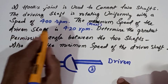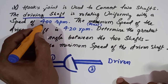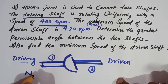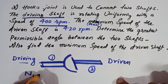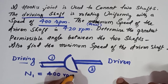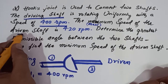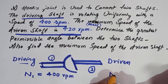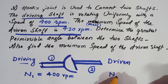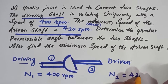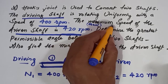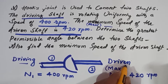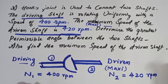The speed of the driving shaft is given as 400 rpm. So for the driving shaft, let N1 denote the speed, and N1 is given as 400 rpm. The maximum speed of the driven shaft is 420 rpm. Let N2 denote the speed of the driven shaft, so N2 maximum is given as 420 rpm.